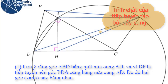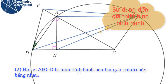First, note that angle ABD is half of arc DA, and angle PDA is also half of arc DA because DP is tangent to the circle. So these two angles are equal, and because ABCD is a parallelogram, these two angles are equal as well.